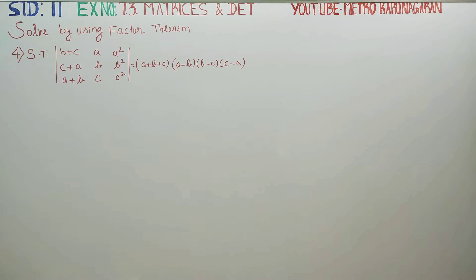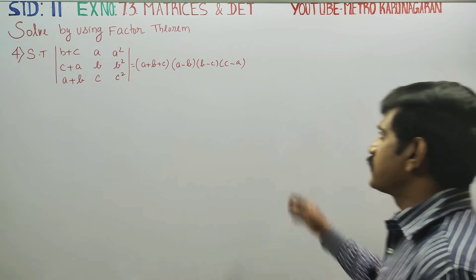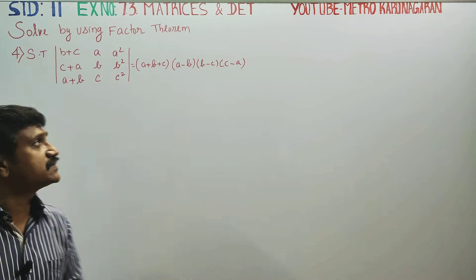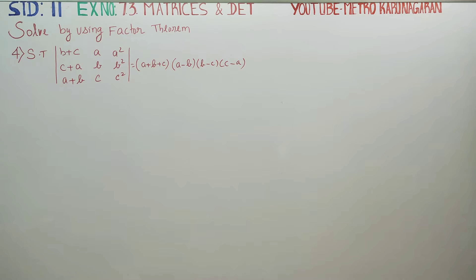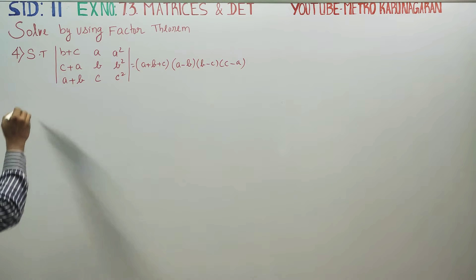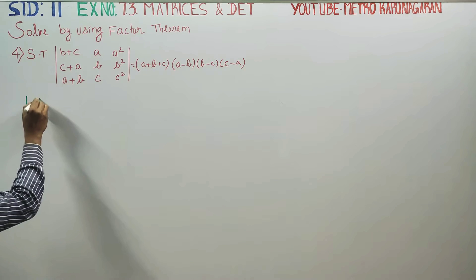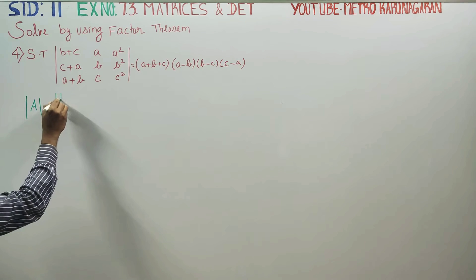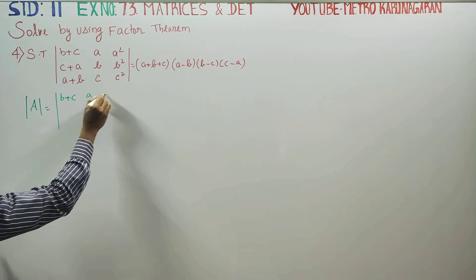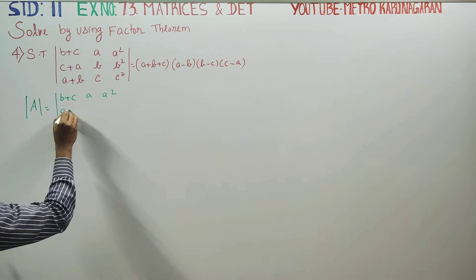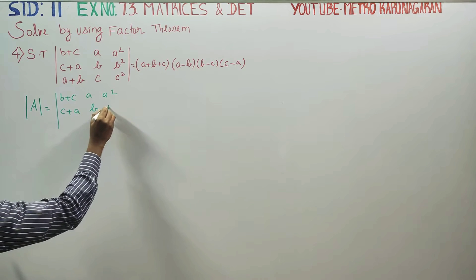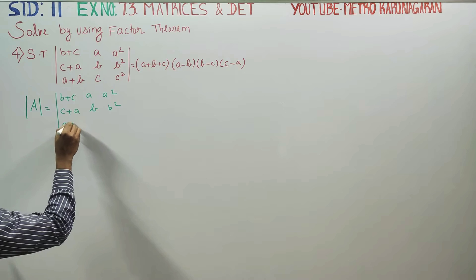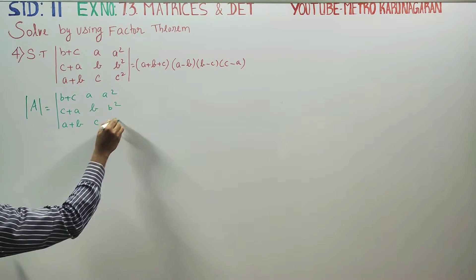On standard students, in exercise number 7.3, solved by factor theorem, we have to show that the value of the determinant is (a+b+c)(a−b)(b−c)(c−a). The determinant A has rows: (b+c, a, a²), (c+a, b, b²), (a+b, c, c²).